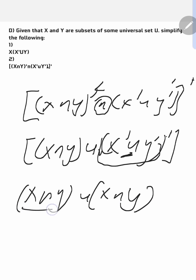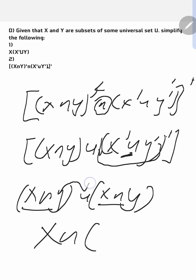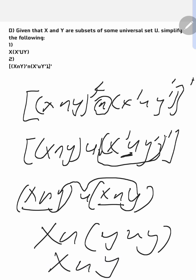What is common here is X intersection — it's common in both terms. So I'm going to factorize it: X intersection. Then what is left is Y union Y. Now if Y union Y is left, what is the union of Y union Y? It is just Y. And that is how you prove it.